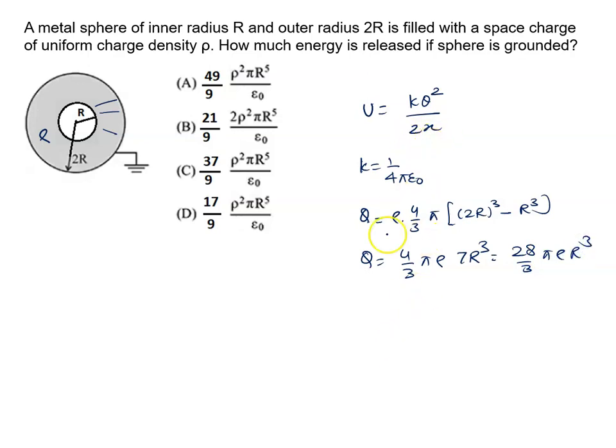2 is left, x is 2R because this distance is 2R. Now we put all the values in this formula: U equal to 1 upon 4 pi epsilon not, q square is 28 by 3 into 28 by 3 into pi square into rho square into r to the power 6, upon 2 into x, x is 2r.